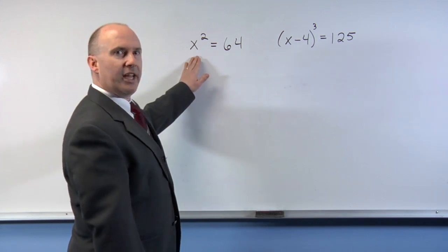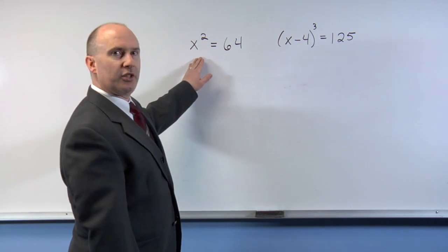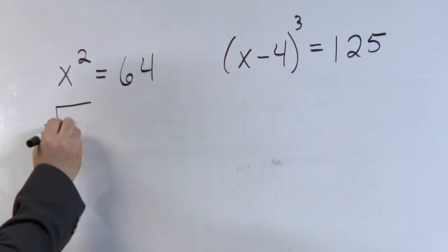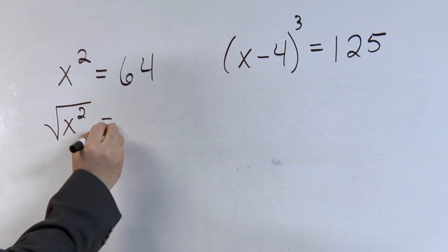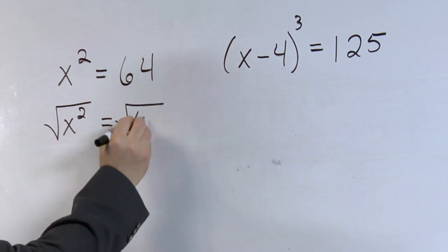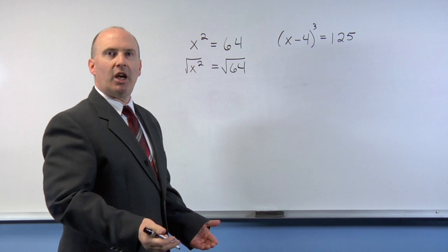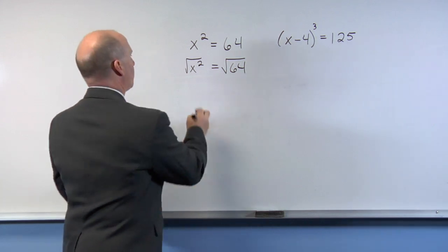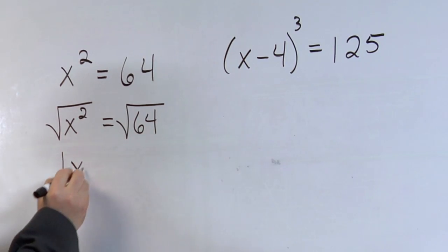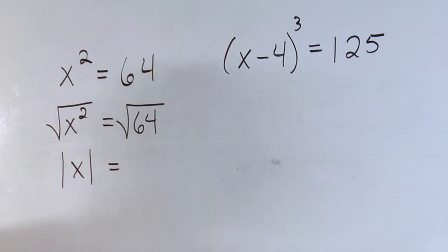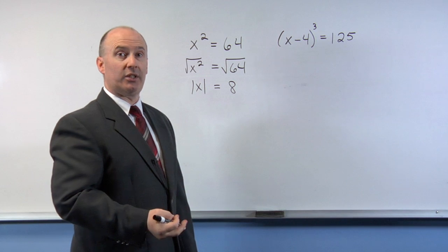To remove the x squared, we need to take the square root of both sides. So I take the square root of x squared equals the square root of 64. Now when you take the square root of x squared, you come up with the absolute value of x. The square root of 64 is 8, because 8 times 8 equals 64.